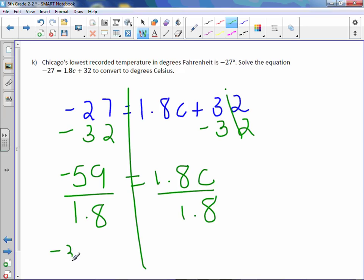And we get negative 32.7 repeating equals C. So we will round to the nearest whole number. Negative 33 degrees Celsius. So negative 27 degrees Fahrenheit is the same thing as negative 33 degrees Celsius.